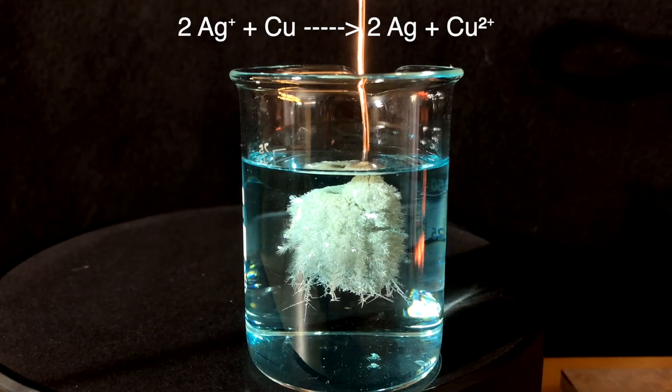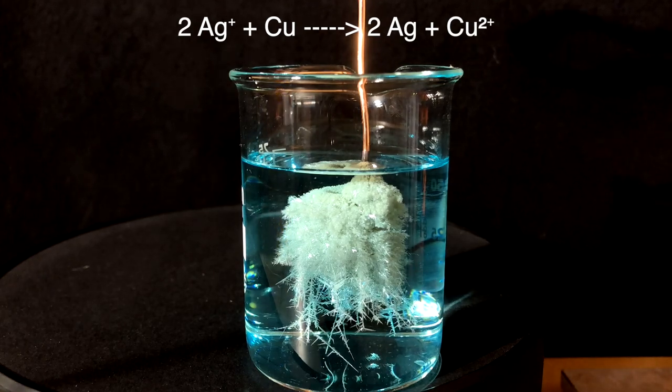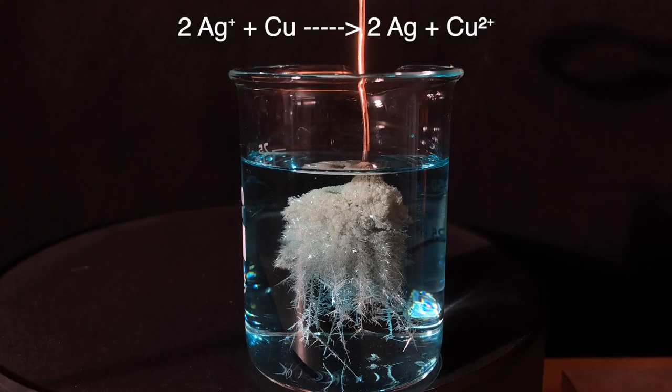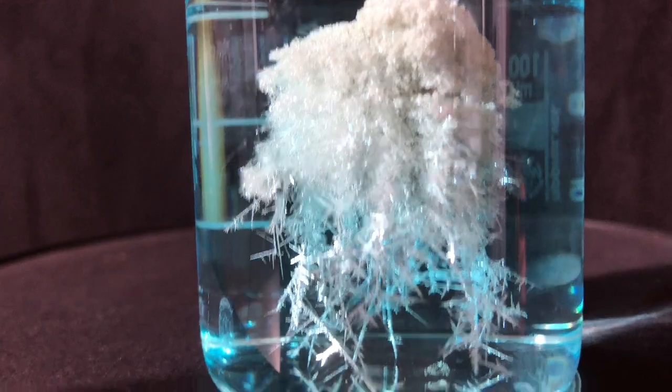The silver plus ions from the silver nitrate solution react with elemental copper to form elemental silver and copper 2 plus ions. You can see that copper 2 plus ions are being formed because the solution took on a blue color.